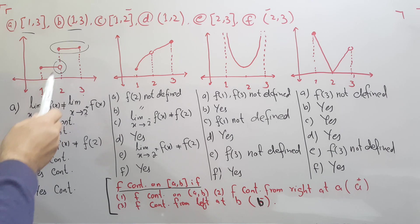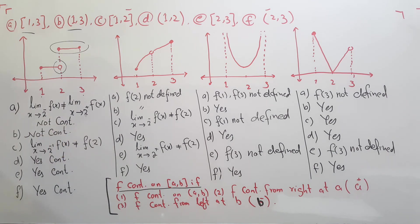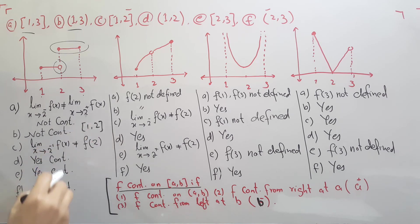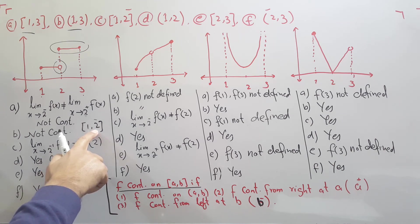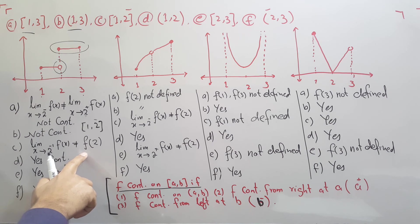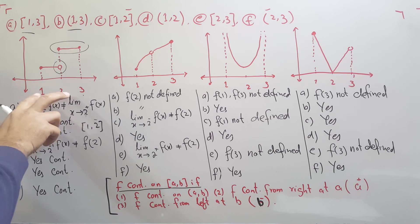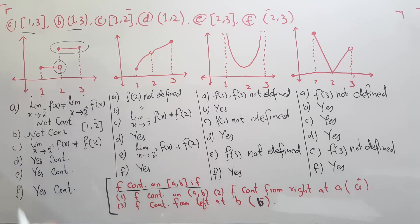For the closed interval [1, 2], the endpoints are 1 and 2. The limit from the left side of 2 is not the same as the function value at 2, and f(2) is not defined, so the function is not continuous. The left-hand limit does not equal f(2). For the open interval (1, 2), we don't include 1 and 2, so in between the function is continuous.